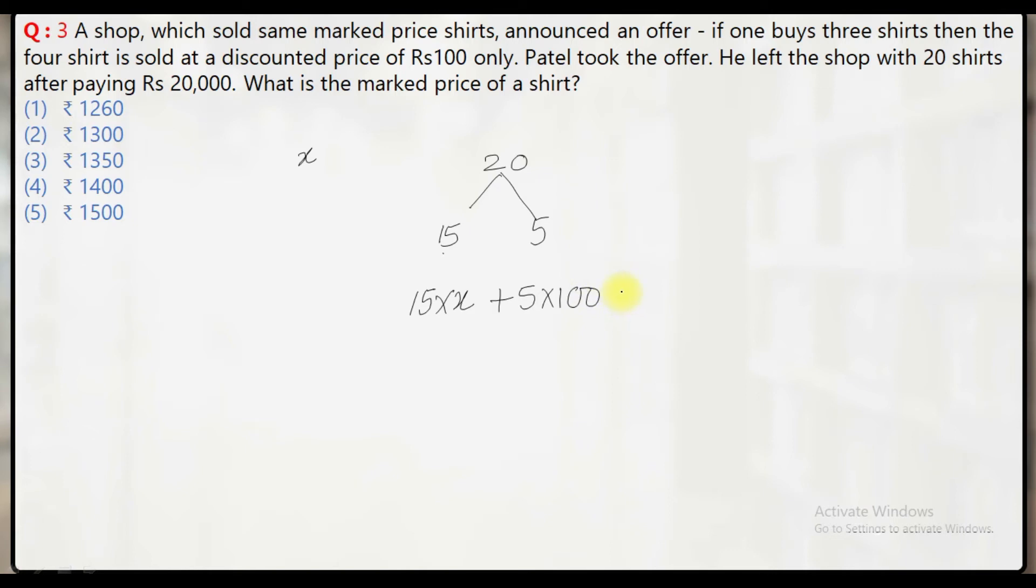So the net amount paid by him must be equal to Rs.20,000. What you will get here is 15X equals Rs.20,000 minus Rs.500, which gives you Rs.19,500.